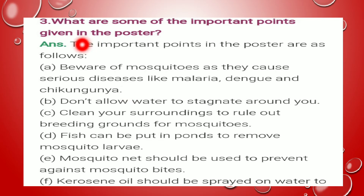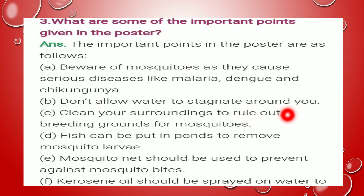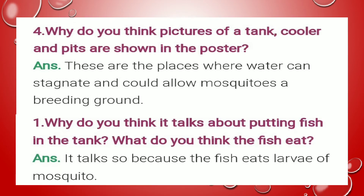What are some of the important points given in the poster? इस poster में क्या-क्या important points दिए हुए हैं? First — beware of mosquitoes, they cause serious diseases. Second — don't allow water to stagnate around you. अपने आसपास पानी इकट्ठा नहीं होने देना. Clean your surroundings to rule out breeding grounds for mosquitoes. Fish can be put in ponds to remove mosquito larva — ताकि वो उन larvae को खा जाएं. Mosquito nets should be used to prevent mosquito bites. Kerosene oil should be sprayed on water — मिट्टी का तेल उस पर छिड़का जाए, जिससे मच्छरों को oxygen नहीं मिलेगी और वो मर जाएंगे.